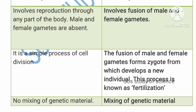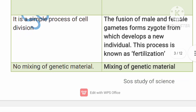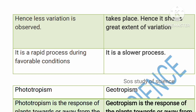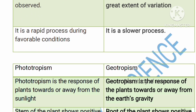In sexual reproduction, the fusion of male and female gametes forms a zygote, from which an embryo develops, and then a fetus in case of animals — or a fruit or seed in case of plants. This fusion is called fertilization. In asexual reproduction there is no mixing of genetic material, whereas in sexual reproduction genetic material gets mixed because both father and mother are involved. Variation is very less in asexual but great in sexual reproduction. Asexual reproduction is a rapid process while sexual reproduction is slower.